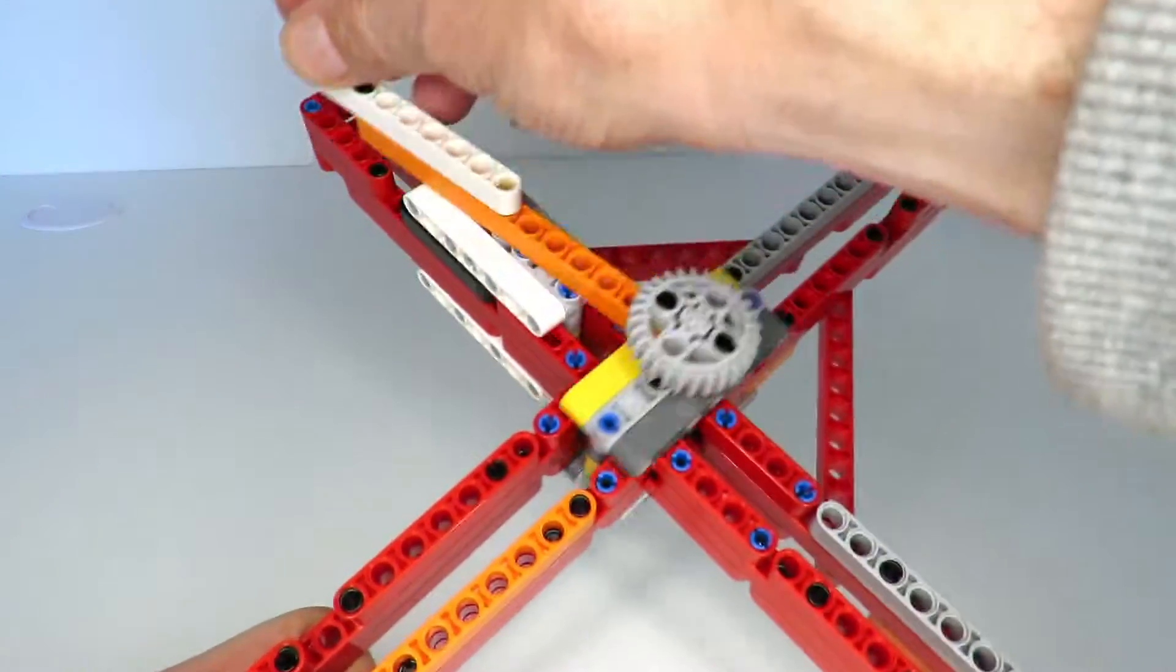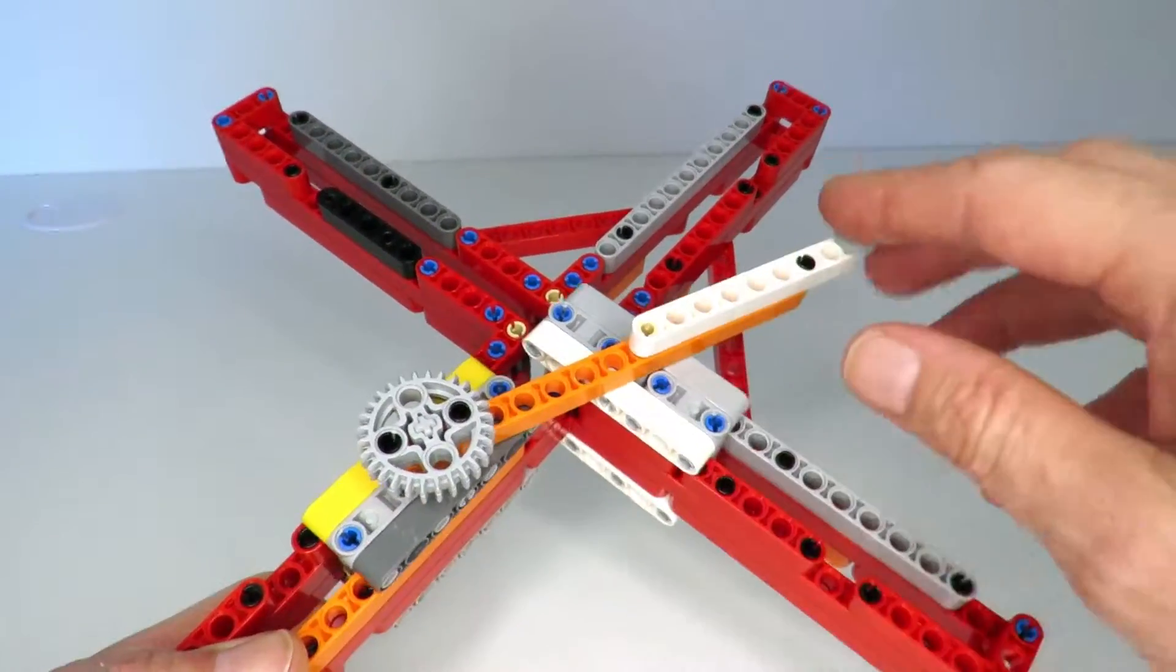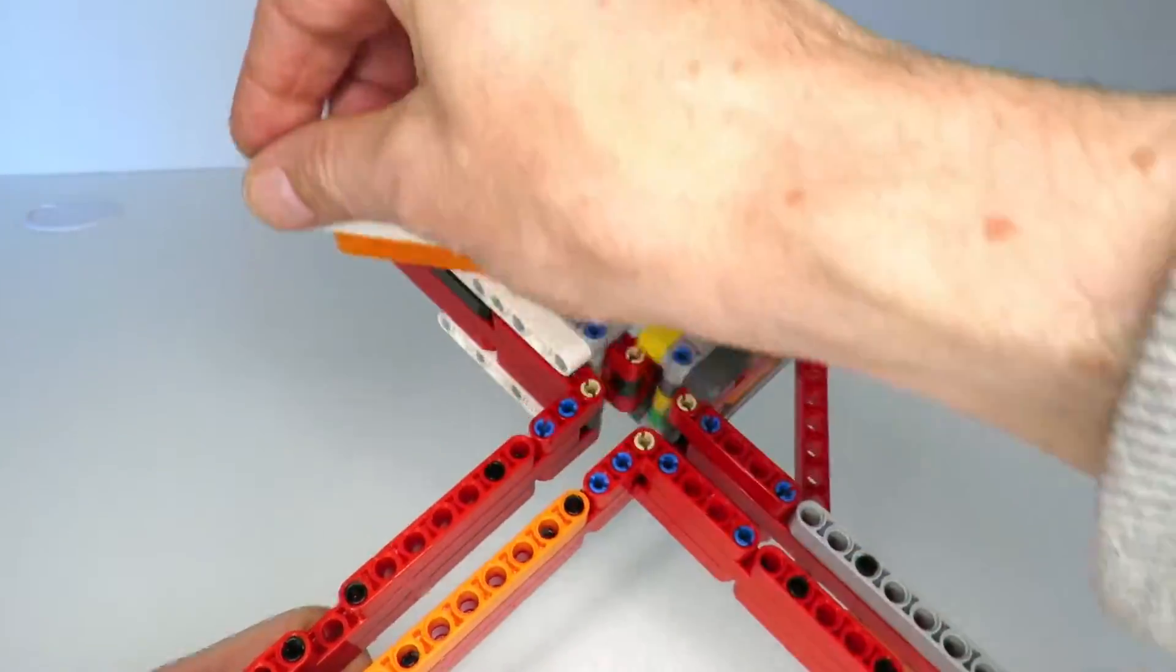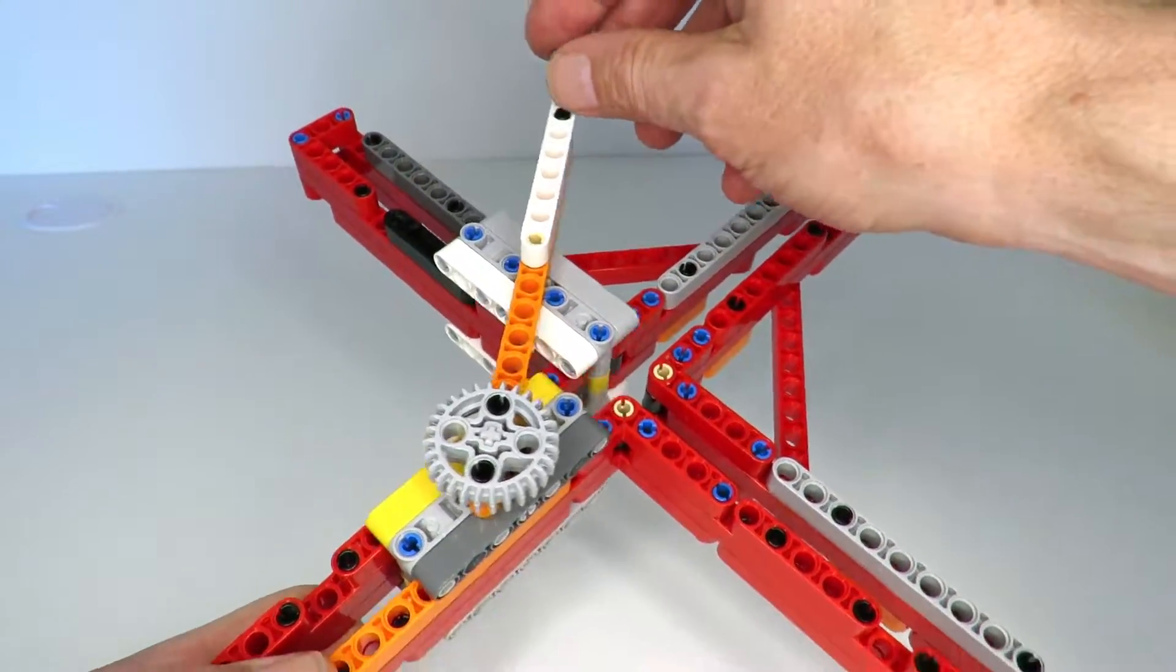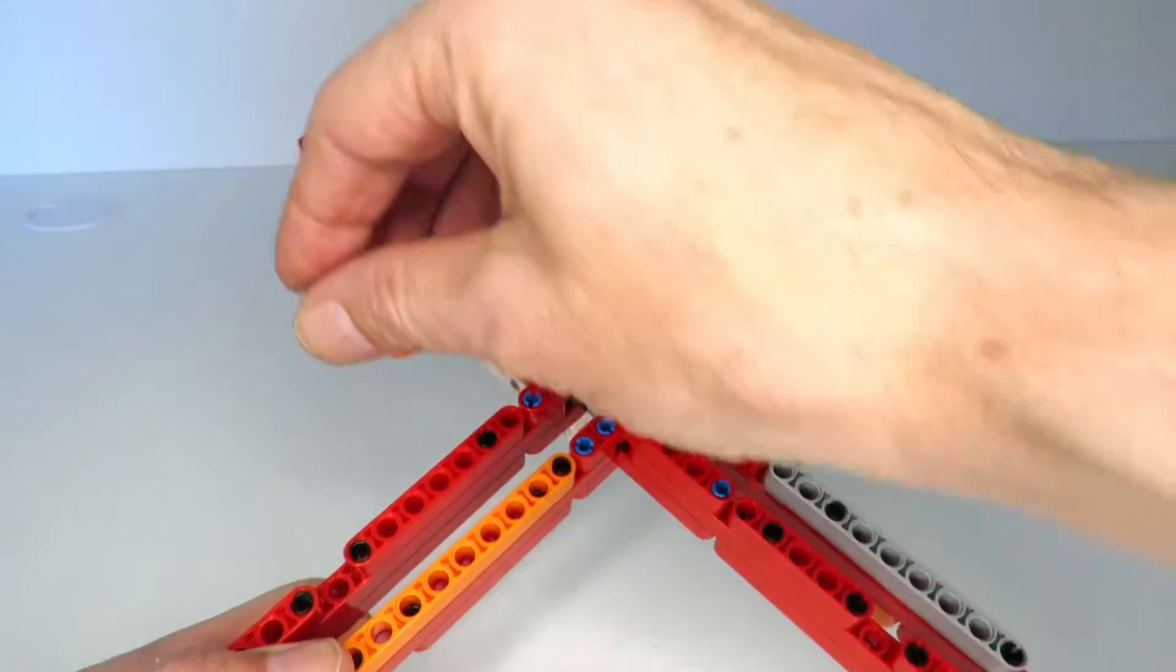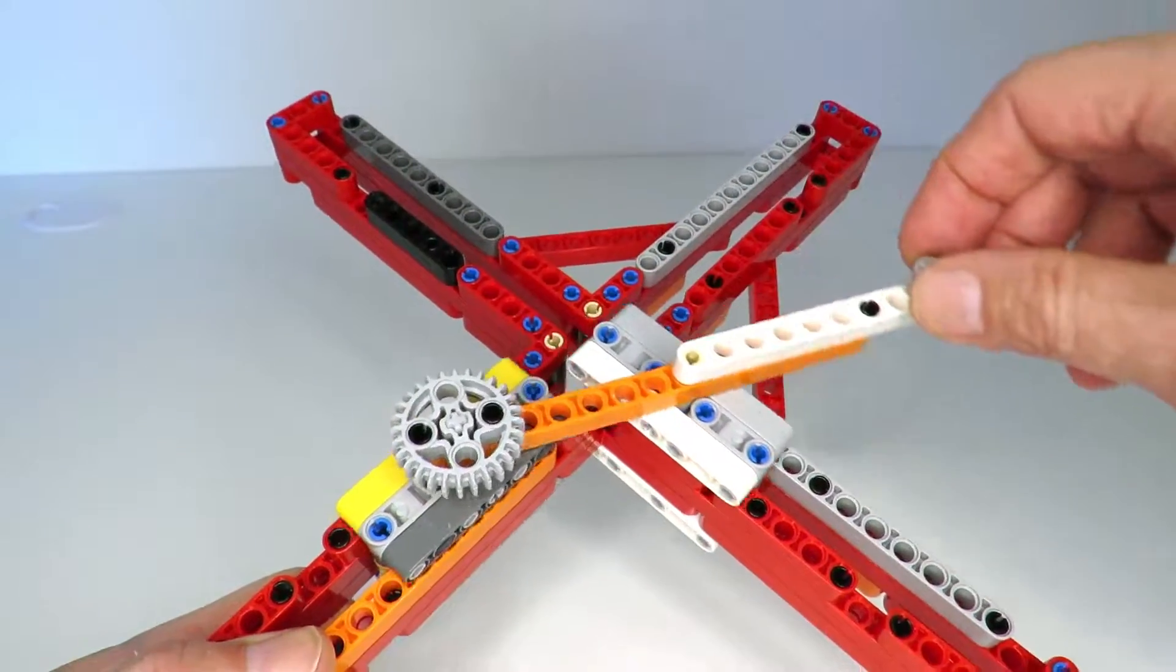You can turn the handle like this, and as you turn the handle these two parts move back and forth. The handle part's called the trammel and the other parts just move back and forth. Now even though it's called a do-nothing machine...